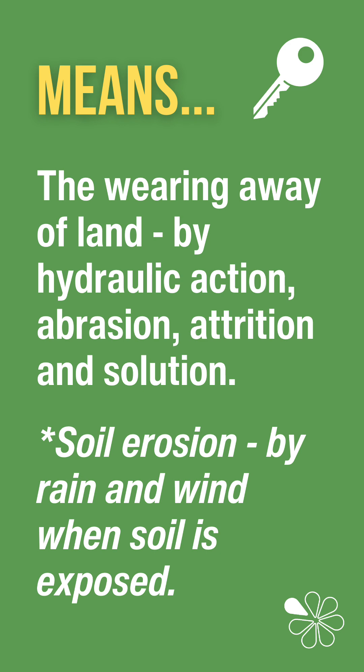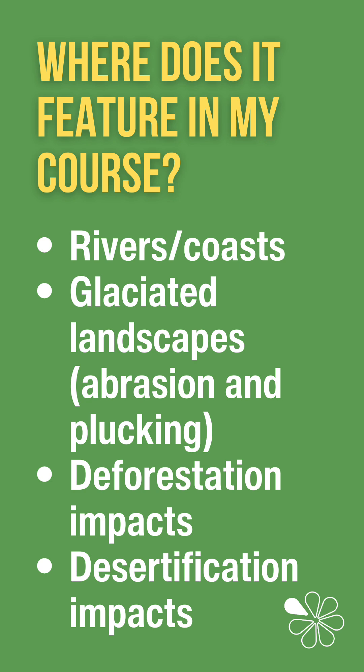Soil erosion can also occur when the soil is exposed, making it vulnerable to rain and wind. Erosion features in the Living World Unit when we think about how both deforestation and desertification lead to soil erosion. There is also a link to development here, as land which has been eroded will be useless for crop growing and will therefore affect food production.